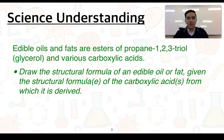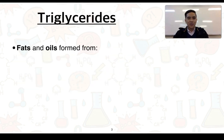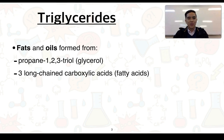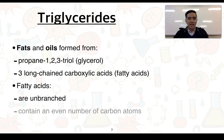You'll need to be able to draw the structural formula of an edible oil or fat given the structural formula or formulae of the carboxylic acid or acids from which it is derived. Triglycerides are fats and oils formed from propane-1,2,3-triol, also known as glycerol, as well as three long-chain carboxylic acids. We term these typically fatty acids, which are usually unbranched and contain an even number of carbon atoms.